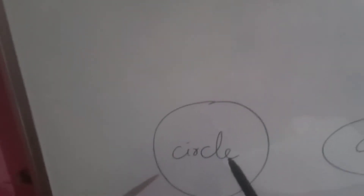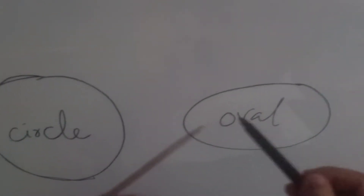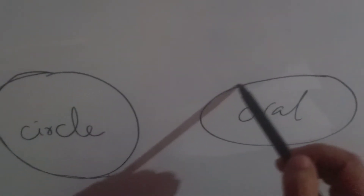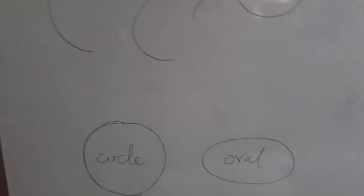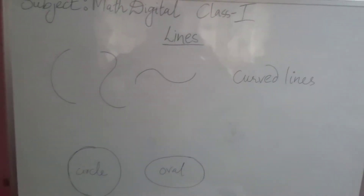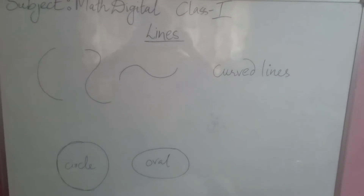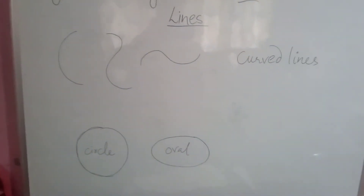As you can see in the circle, there is a curve like this — this shape of curve has been used to make the circle. And also in the oval, there is a curve shape being used. So curved lines are used to draw circles and oval shapes.